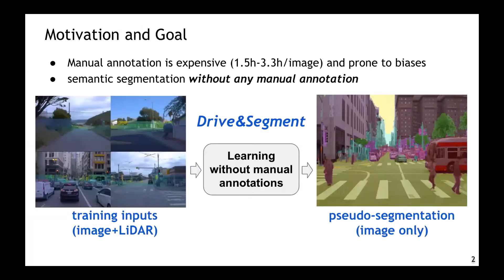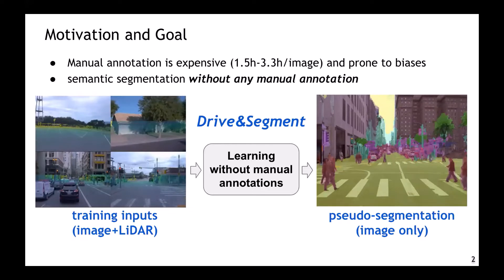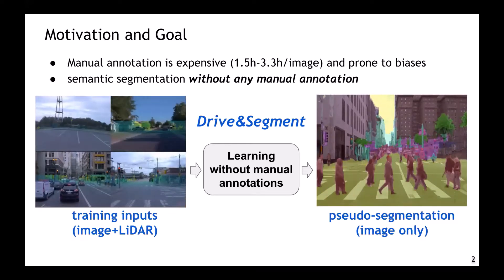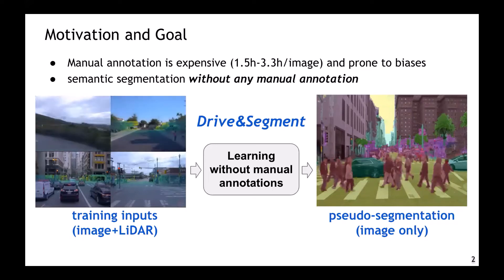Current supervised semantic segmentation models require a large amount of pixelized annotations, which are expensive and hard to obtain manually. Our goal is to learn semantic segmentation in urban scenes without any manual annotation, just by exploiting raw data from LiDAR scanners and cameras.